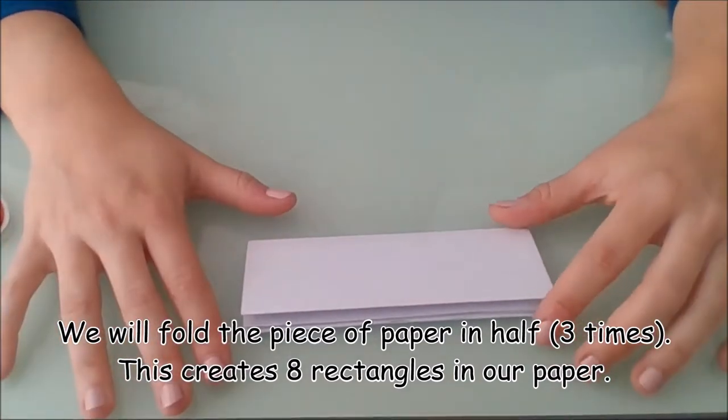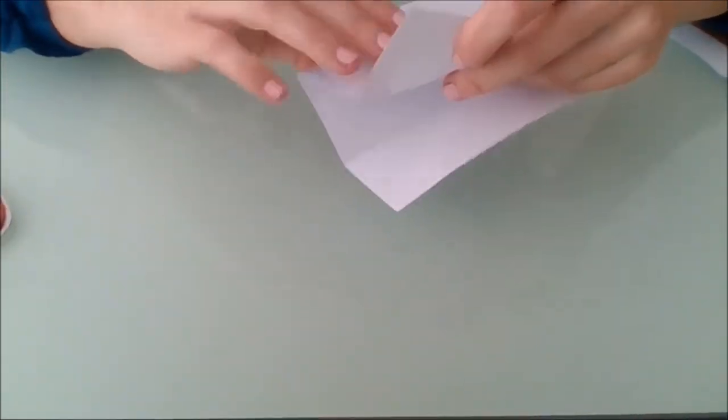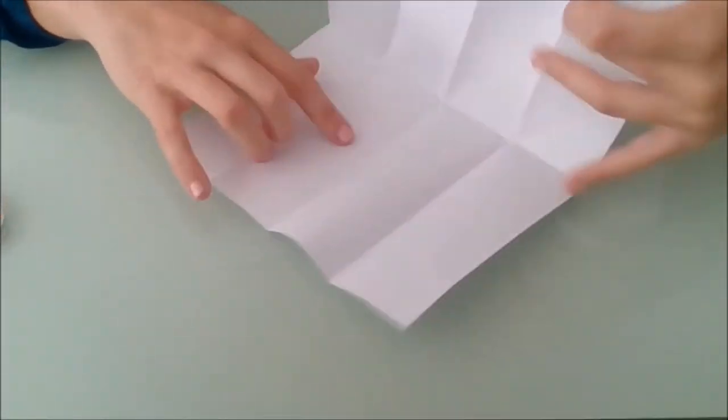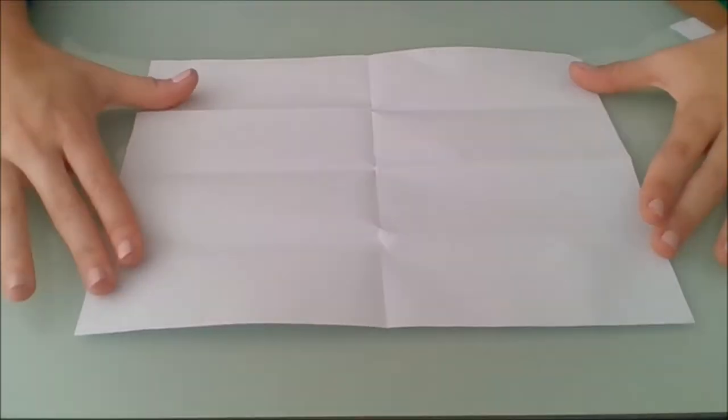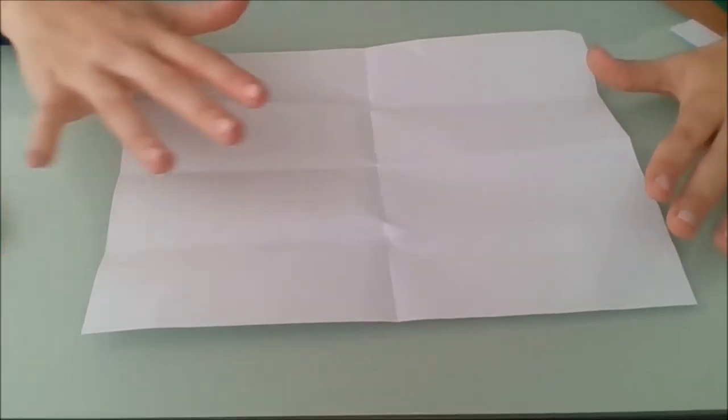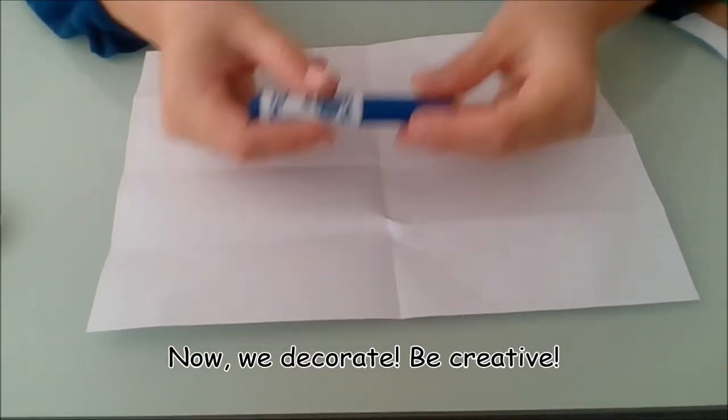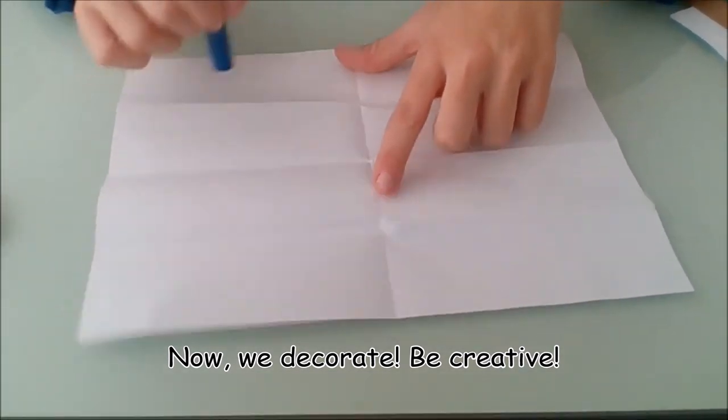Okay, once we have this, what we are going to do is now open the paper. When you open your paper you should see eight stripes. Now the first example Miss Angela did it on a normal piece of paper, so what we're going to do now, you can take markers and you can decorate each line.